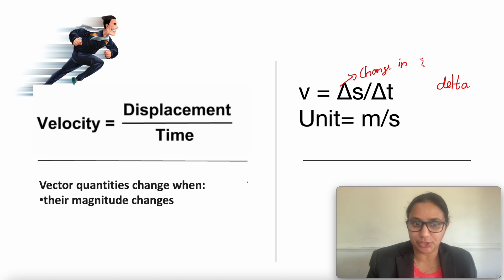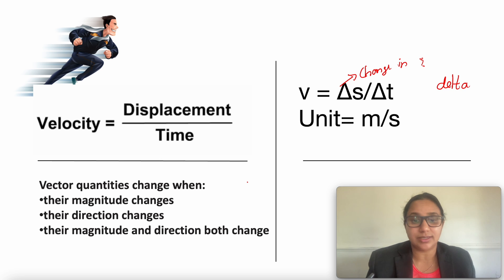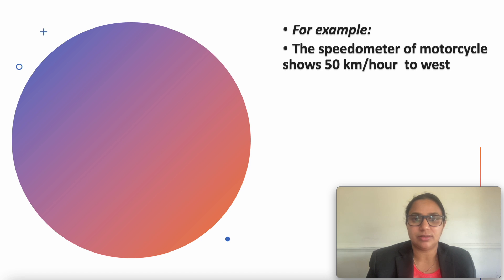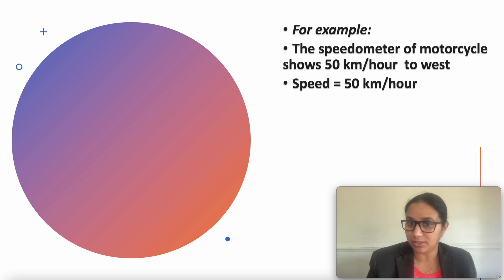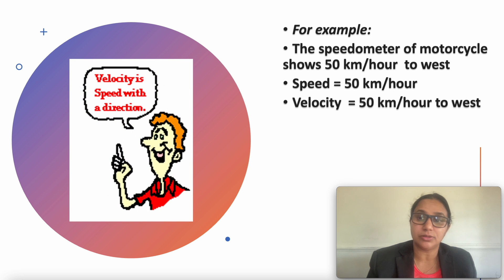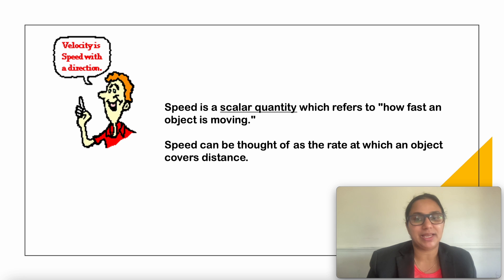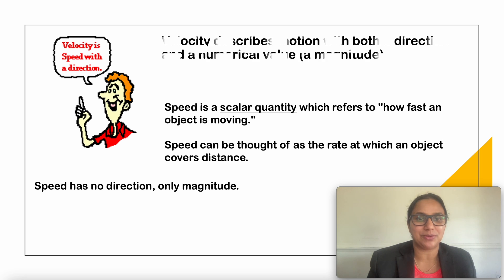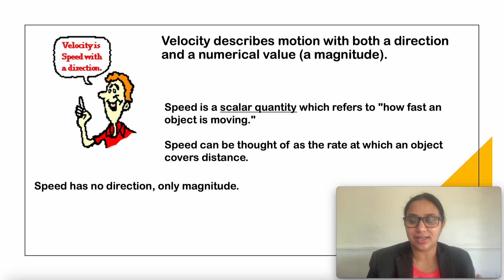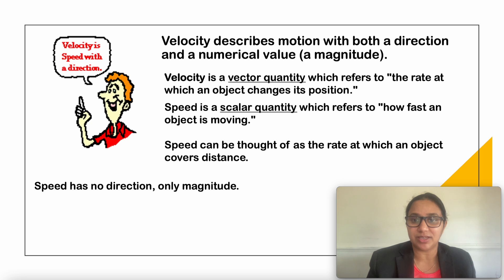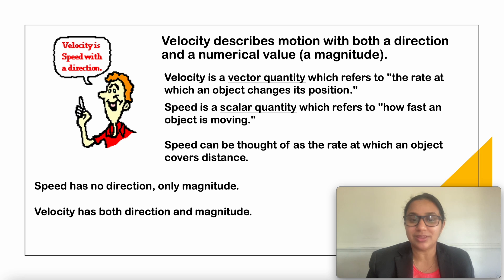Vector quantities change when their magnitude changes, their direction changes, or both their magnitude and direction change. For example, the speedometer of a motorcycle shows 50 km per hour to the west. Speed here is 50 km per hour, but velocity is 50 km per hour to the west. Speed is a scalar quantity referring to how fast an object is moving — it is distance travelled over unit time and has no direction. Velocity describes motion with both direction and magnitude; it is a vector quantity referring to the rate at which an object changes its position.